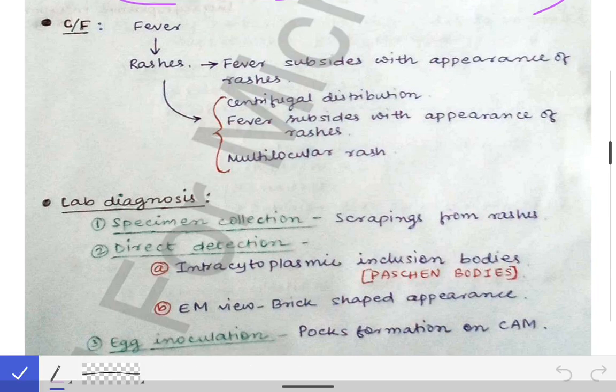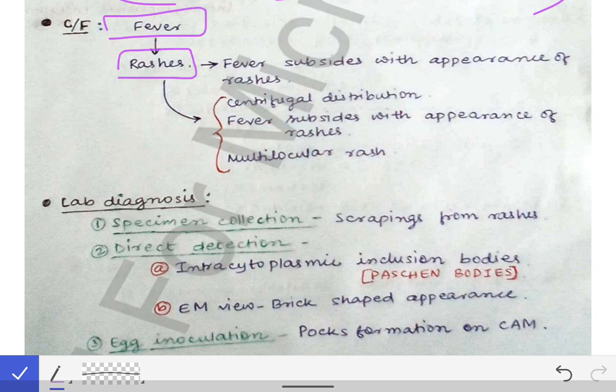Now, the clinical features of the smallpox or variola virus infection: first there will be fever, then the appearance of rashes. Once the rashes appear, the fever will subside. This is different from chickenpox, where fever occurs with each crop of rashes. In smallpox, there is a single crop of rashes, and just as the rashes appear, the fever subsides.